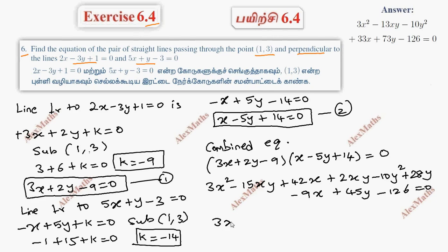Then minus 9x plus 45y minus 126 equals 0. Now grouping like terms: the xy term is minus 15 plus 2, which gives minus 13xy.